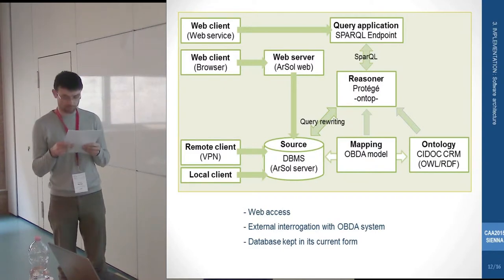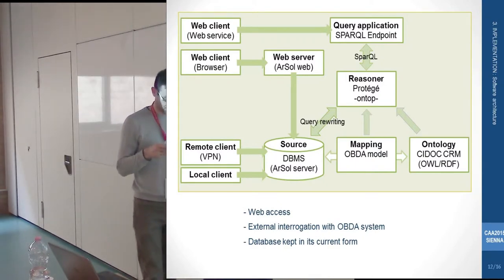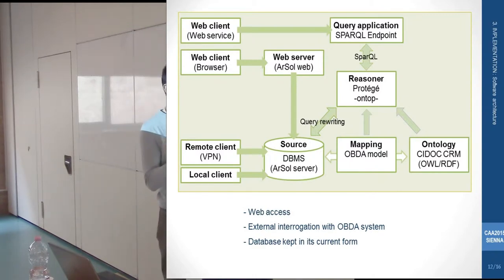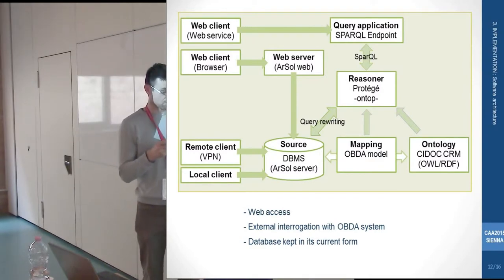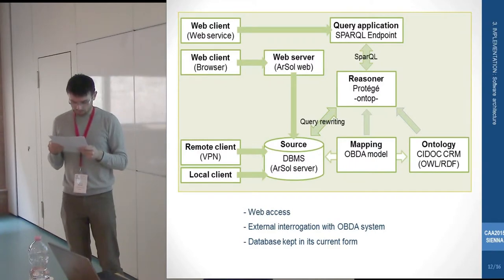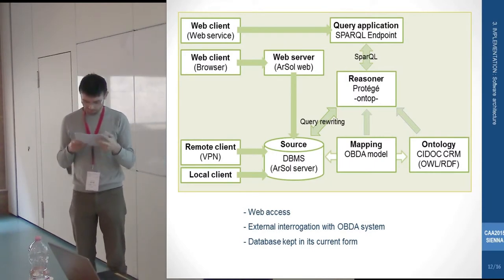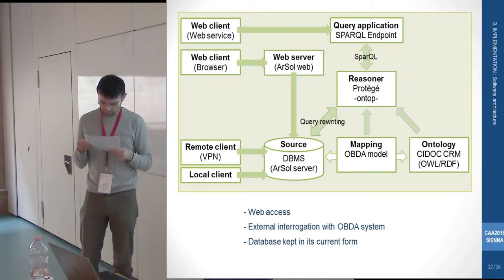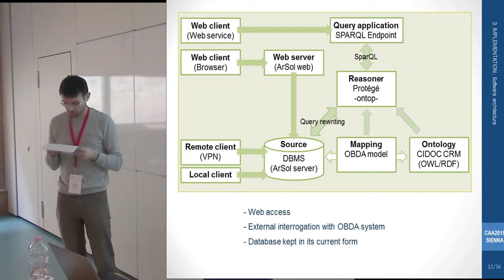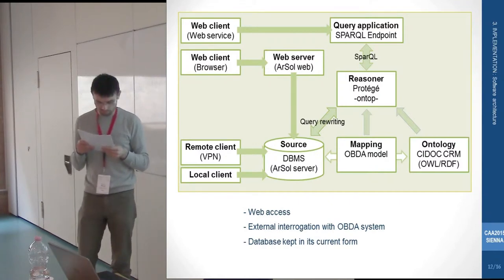An OBDA system consists of an ontology at the semantic level, a set of mappings expressing the relationship between the data source and the ontology, and the various data sources — in our case, ARSOL. We chose to use ONTOP, developed by Professor Calvanese and his team at the University of Bozen-Bolzano. ONTOP looks like an extension of Protégé, free software dedicated to ontologies, developed in Java. It first allows us to specify the match between the ontology and the database, then to evaluate SPARQL queries about the ontology, whose results are searched for in the database.